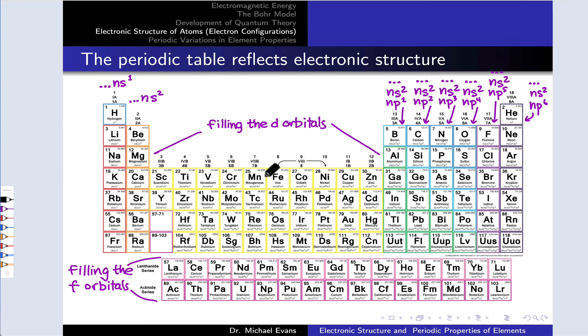When we finally get to a value of n where we can have a D subshell at n equals 3, we start filling up that 3D, 4D, 5D subshell. And as we're filling those D orbitals, we're in what's called the D block. And when we're finally to the point where we can have an F subshell at n equals 4, we start filling up those F orbitals down here at the lanthanides and actinides. And this is called the F block.